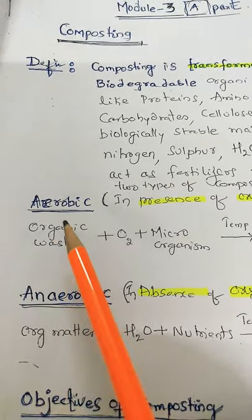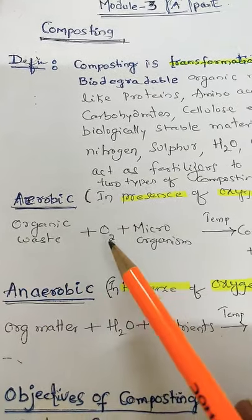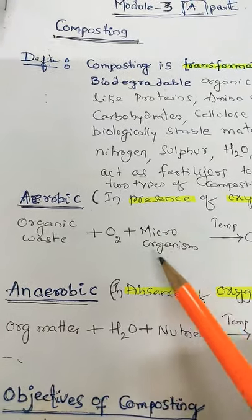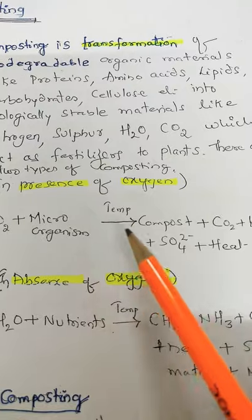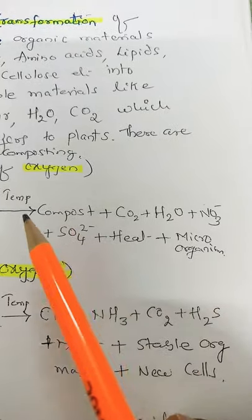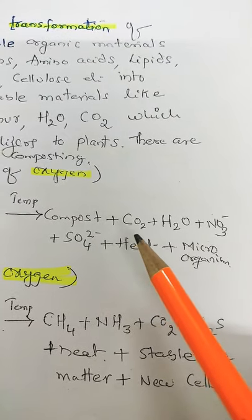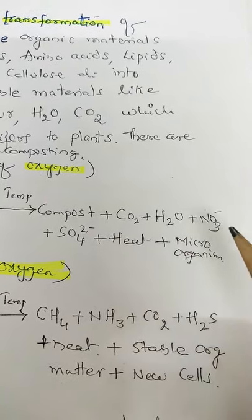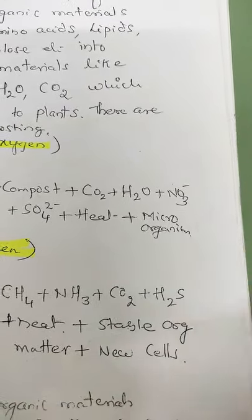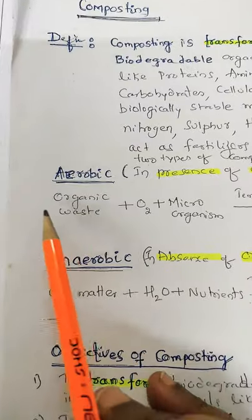What happens in aerobic? Organic waste, when added with oxygen plus some microorganisms, in warm temperatures around 50 to 55 degrees, it is converted into compost — that is simple materials which can be absorbed by plants — plus carbon dioxide is liberated, and water and nitrogen and sulfur oxides are liberated with some amount of heat, and microorganisms again are rebuilt in that matter. This is the aerobic reaction.